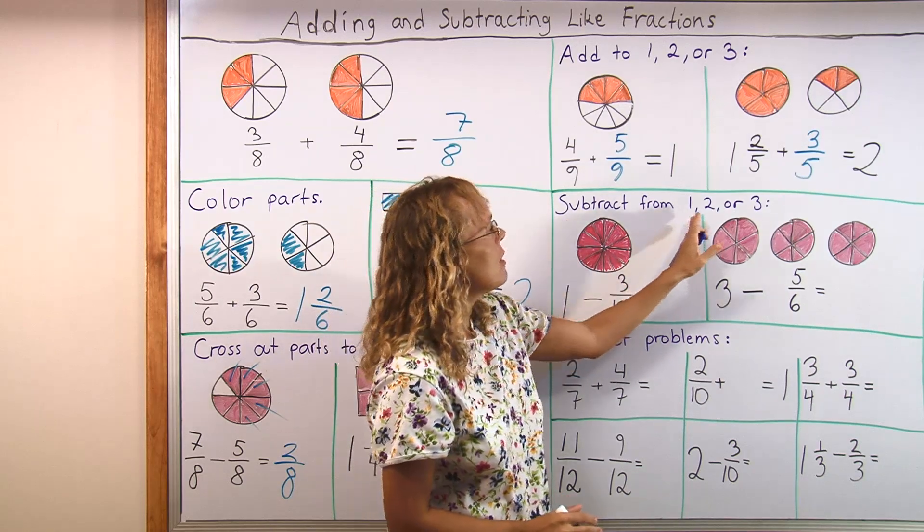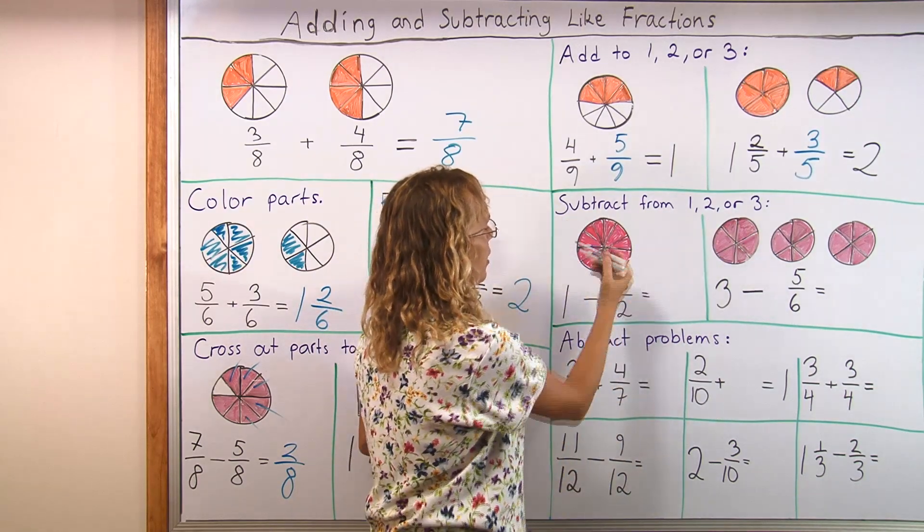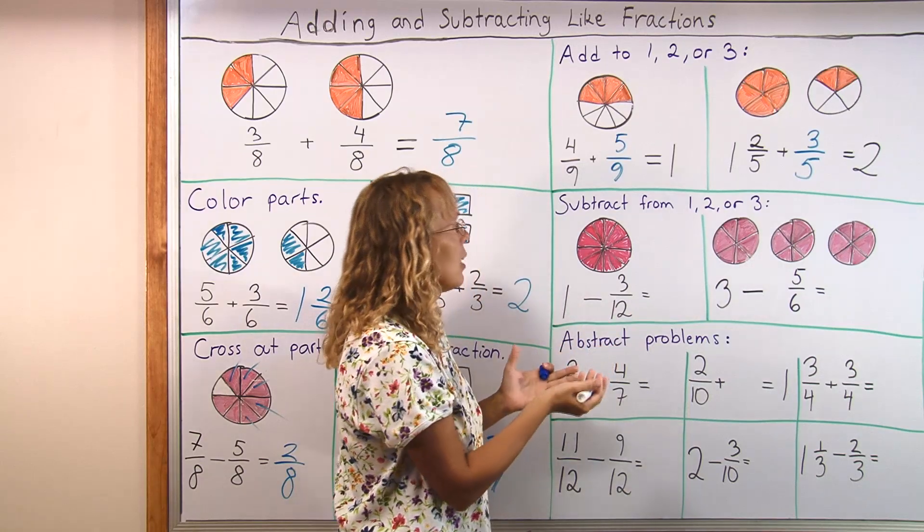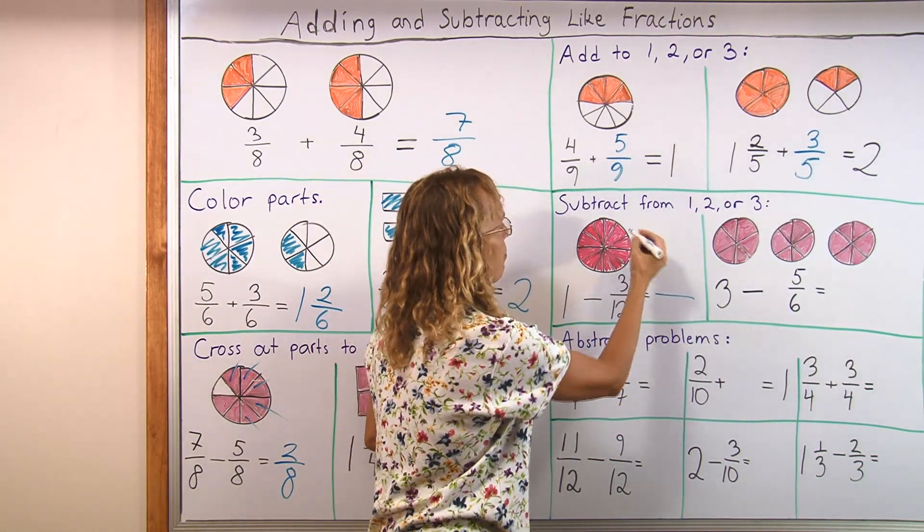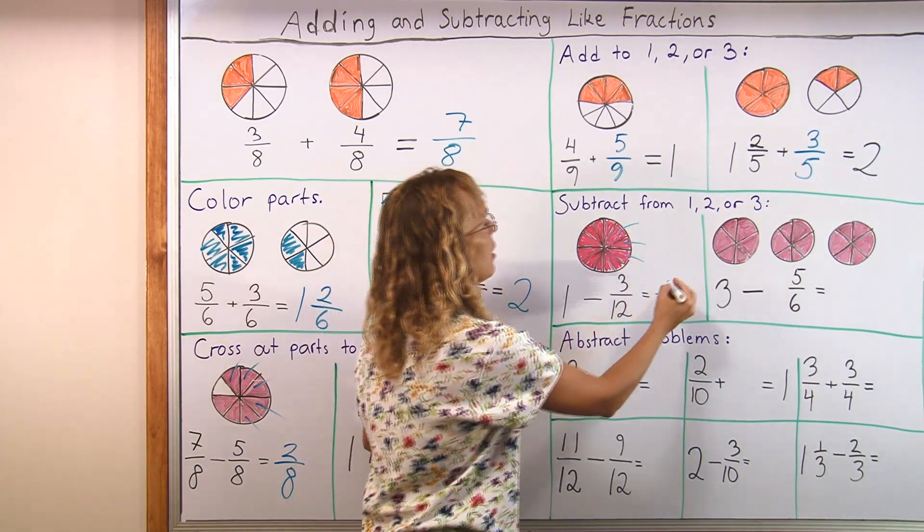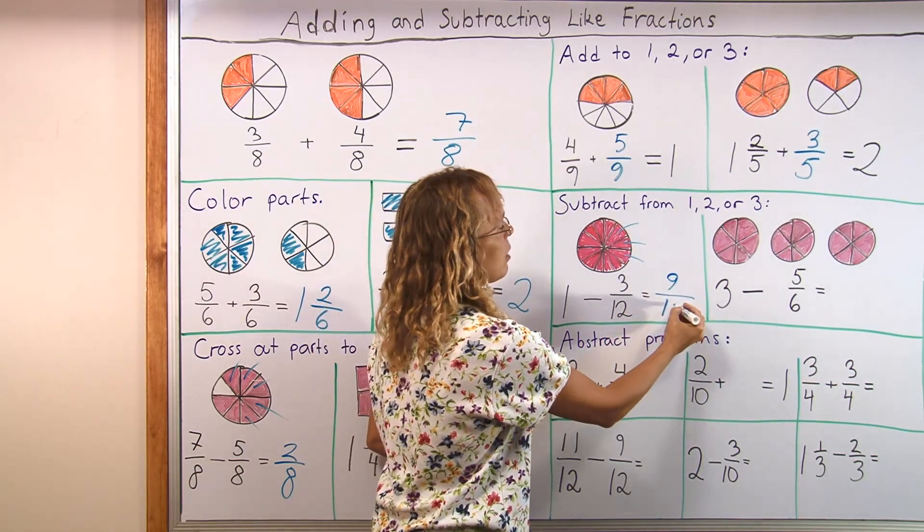Subtract from 1, 2 or 3. So we have 1 whole pie, we subtract 3 twelfths. And the picture helps the child to see that we will have them, you know, they can cross off those 3 and 9 slices are left and they are twelfths.